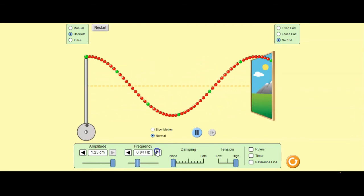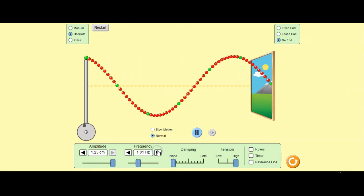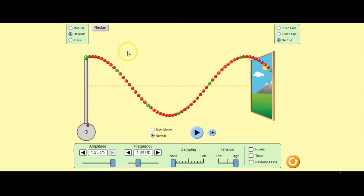All right, so here's a frequency of one hertz. The distance from peak to peak or from trough to trough is a wavelength.